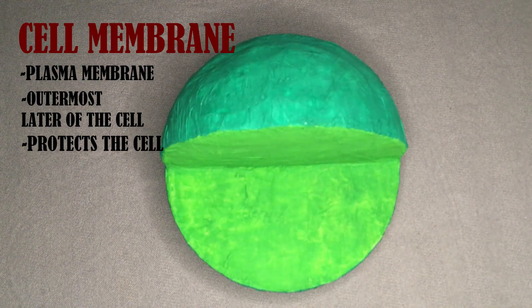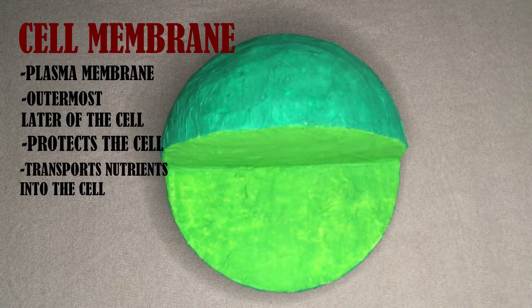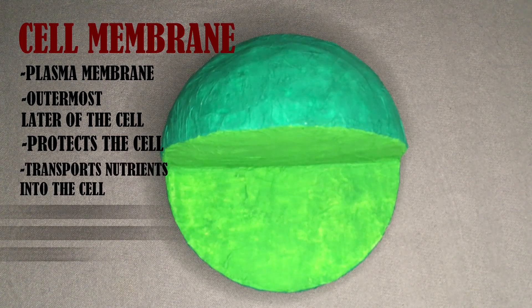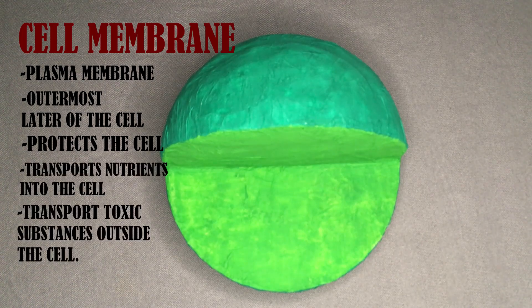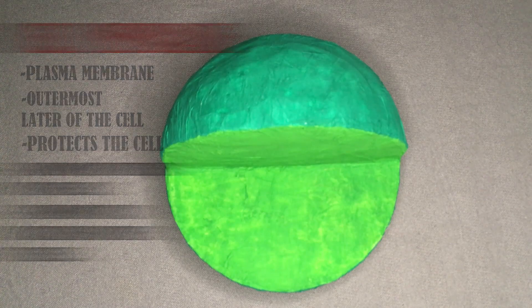One of the primary functions of the cell membrane is to transport nutrients into the cell, and to transport toxic substances outside the cell.